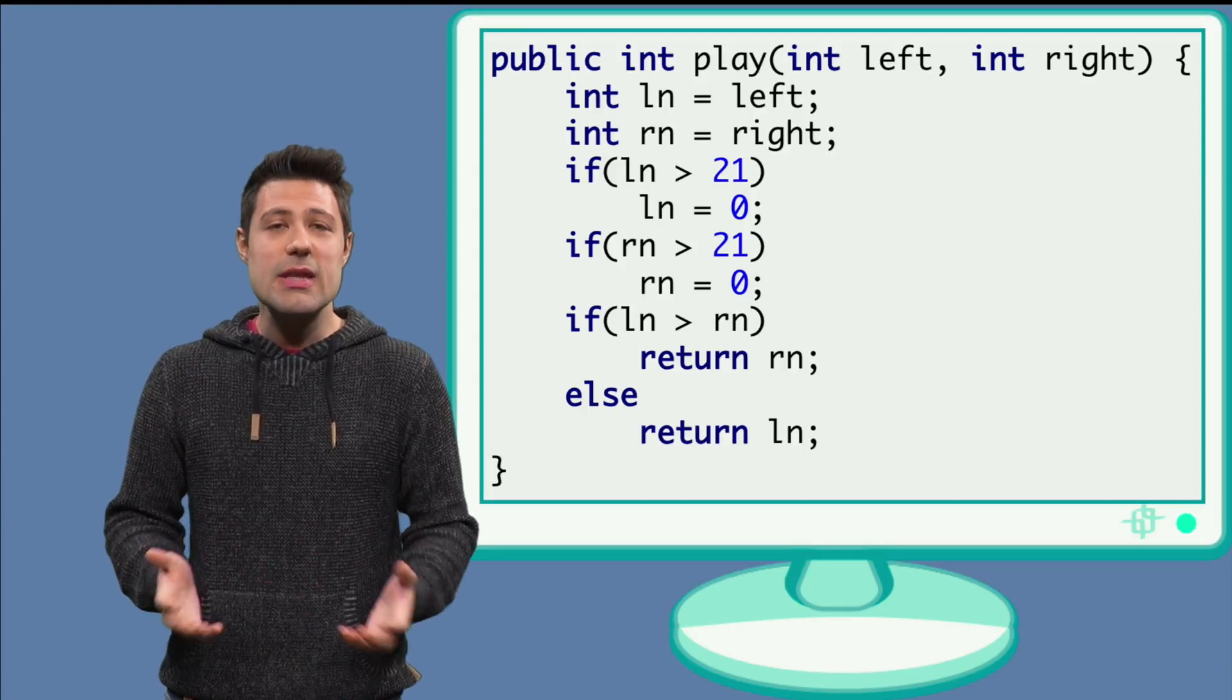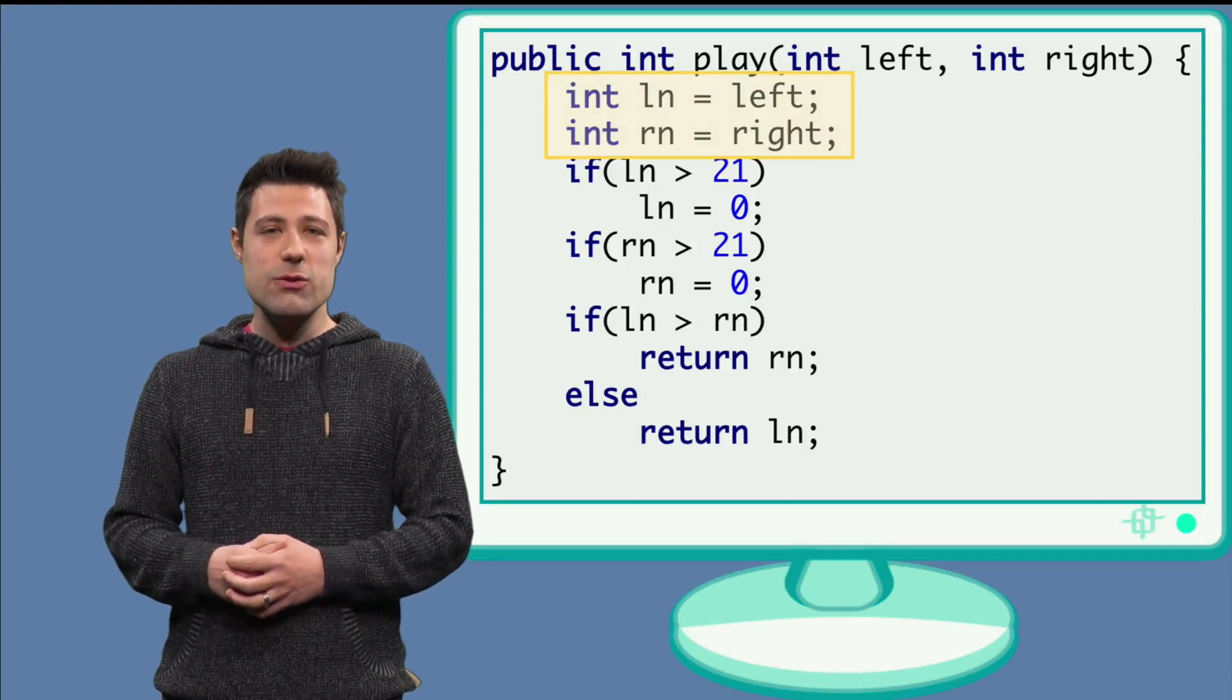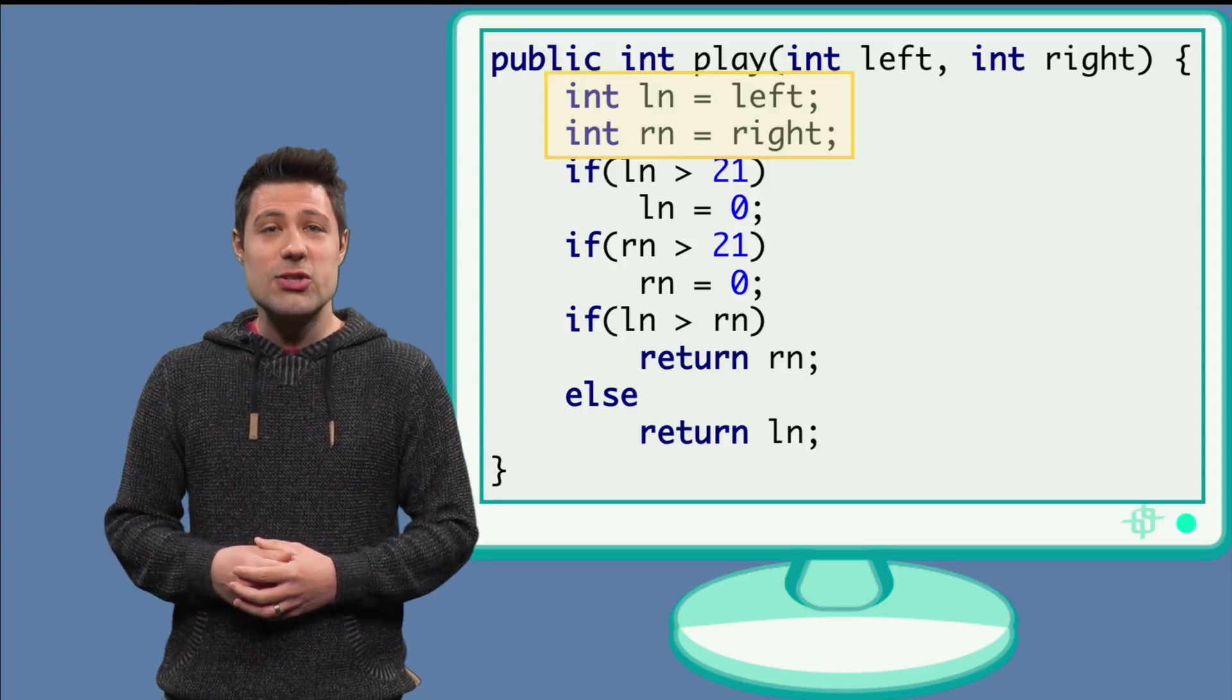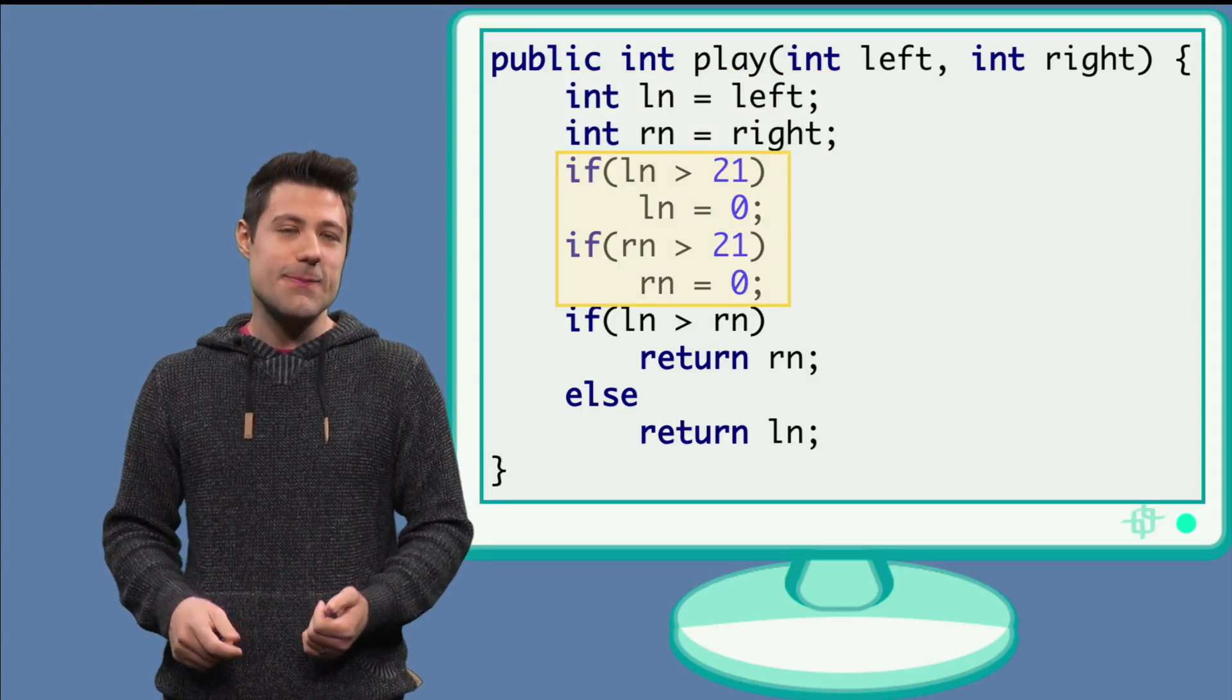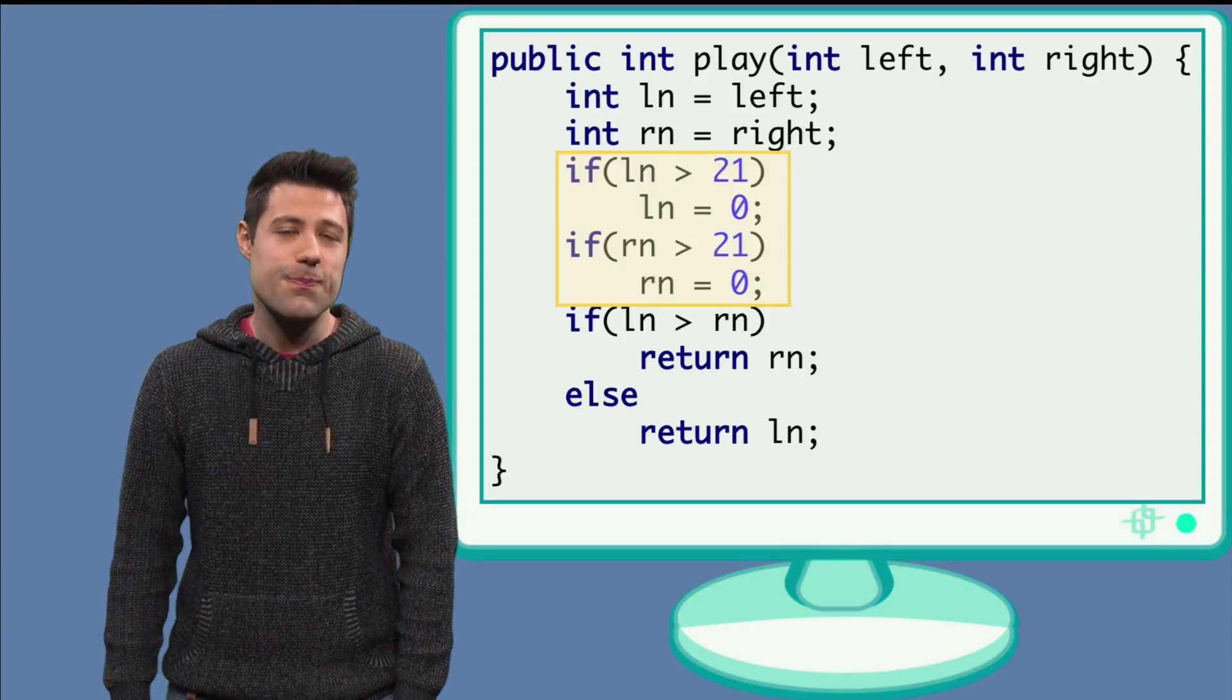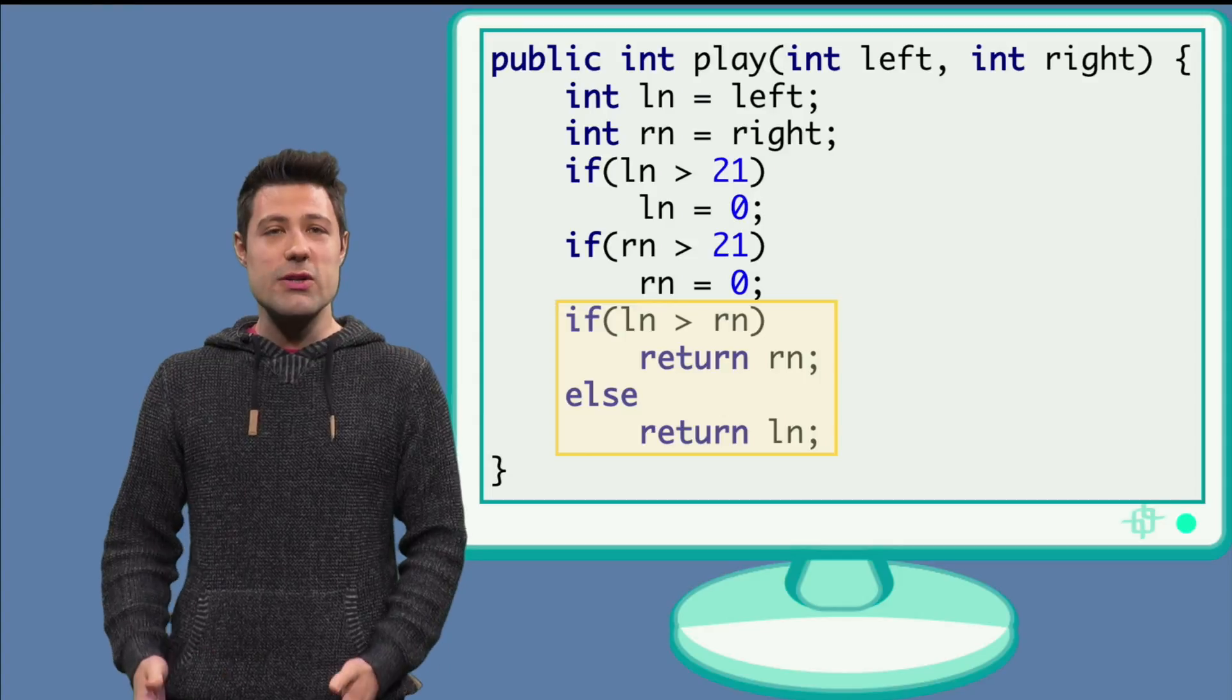The implementation first copies both values to new variables, ln and rn, then it checks whether they are greater than 21. If they are, the implementation changes it to zero. At the end, the code returns the greatest number.